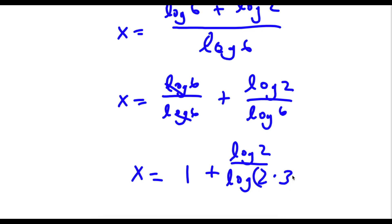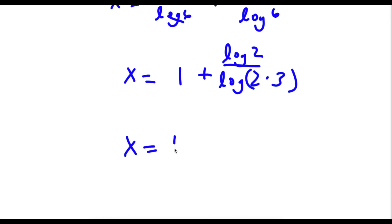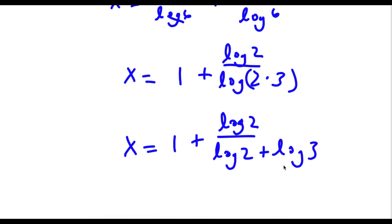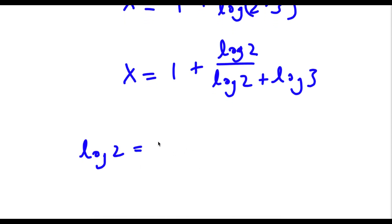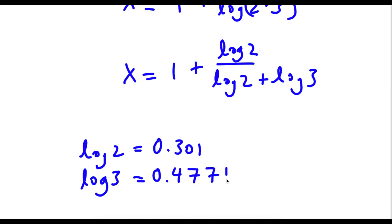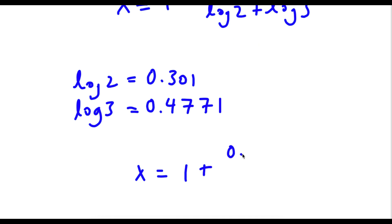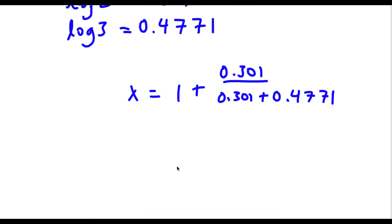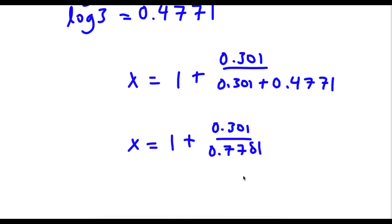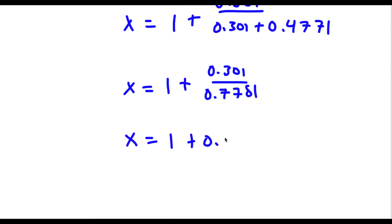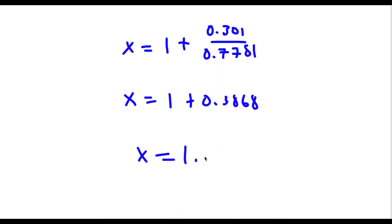I'm going to rewrite log 6 as log 2 times 3. So now I have x is equal to 1 plus log 2 over log 2 plus log 3. Now log 2 is equal to 0.301 and log 3 is equal to 0.4771. So x is equal to 1 plus 0.301 over 0.301 plus 0.4771, which gives 1 plus 0.301 over 0.7781, which is 1 plus 0.3868. So x is equal to 1.3868.